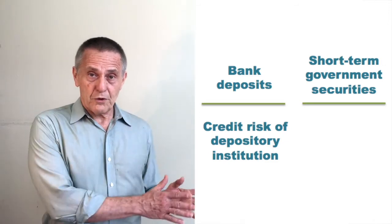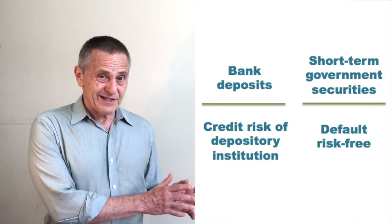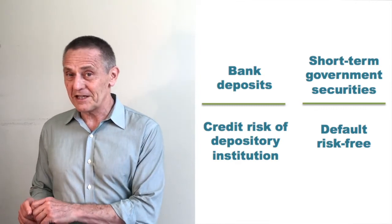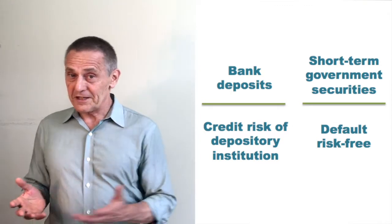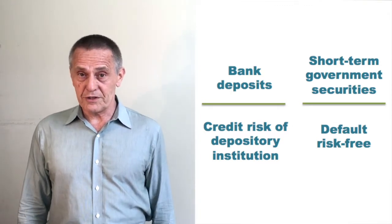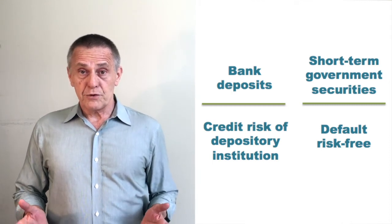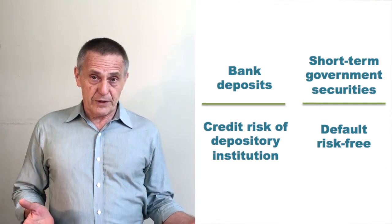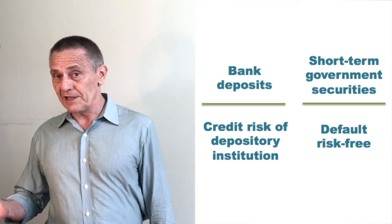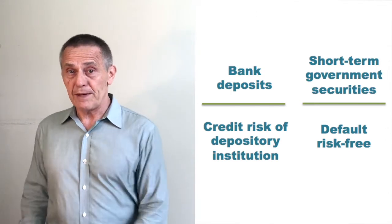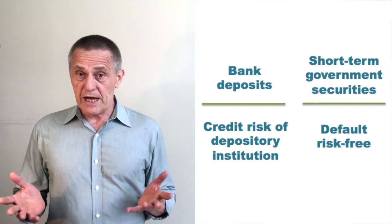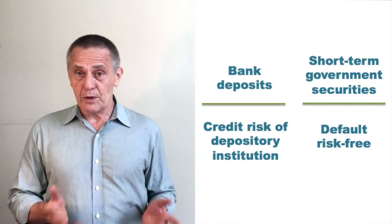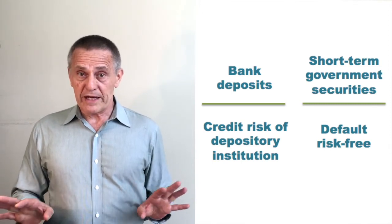Think about the alternatives. Would you rather hold nearly default-risk-free government securities at a slight negative interest rate, or hold a bank deposit at maybe a slight positive or slight negative interest rate — probably a less negative rate than is available on short-term treasury securities — but with the credit risk of the banking institution? Especially in the midst of financial turmoil, institutions will look at those two alternatives, and holding the short-term government debt at a slightly more negative yield seems like the more optimal choice given the lack of default risk.